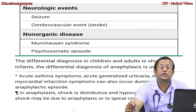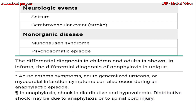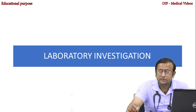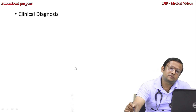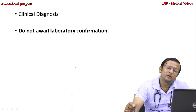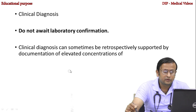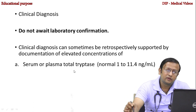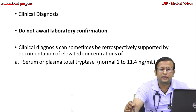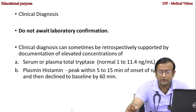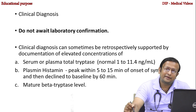The differential diagnosis of anaphylaxis must be evaluated very closely, but early treatment is always indicated in management of anaphylaxis. There is no primary role for laboratory investigation, and it may not be available in peripheral or even tertiary care settings. Anaphylaxis is always a clinical diagnosis — do not await laboratory confirmation. Clinical diagnosis can sometimes be retrospectively supported by elevated serum or plasma total tryptase, with normal values of 1 to 11.4 nanograms per milliliter. Plasma histamine peaks within 5 to 15 minutes of symptom onset and declines to baseline by 60 minutes. New trials on mature beta-tryptase are also underway.